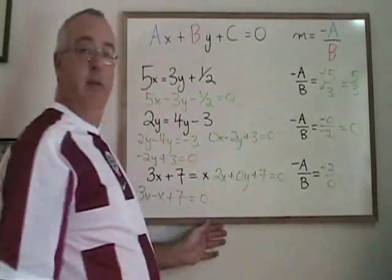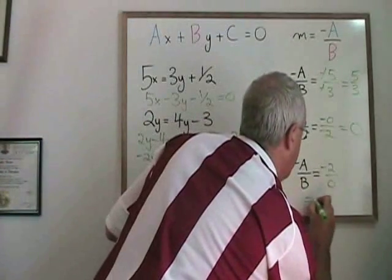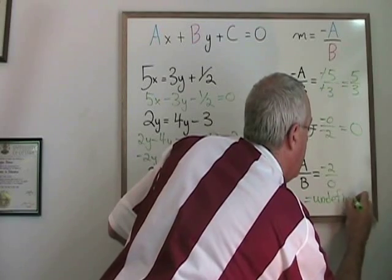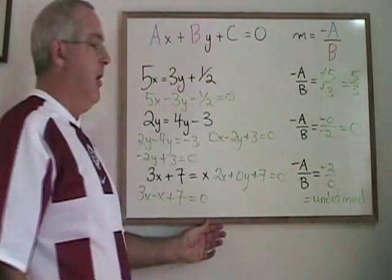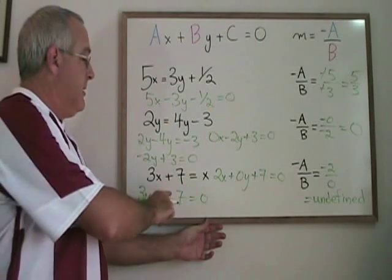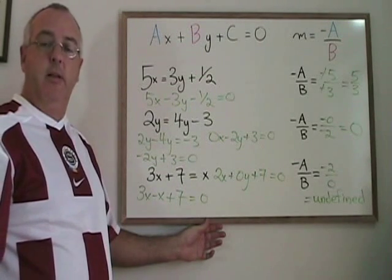I end up with negative 2 over 0 when I plug them into the formula. And, of course, when I divide by 0, the answer is undefined. The slope for this straight line is undefined, as it has to be because the slope of all vertical lines is always undefined.